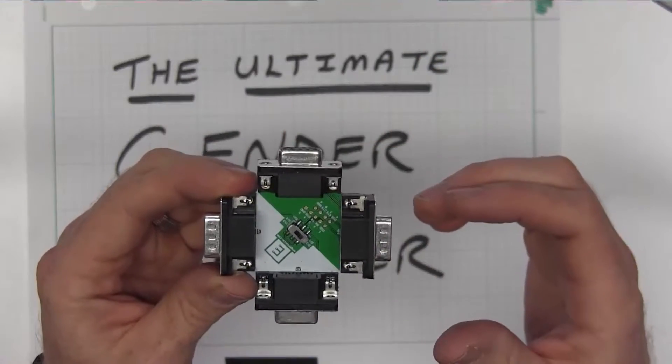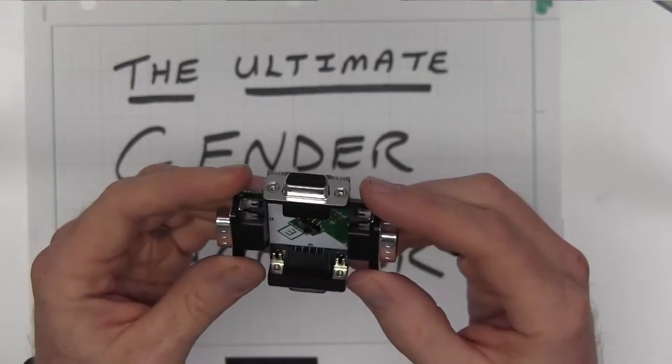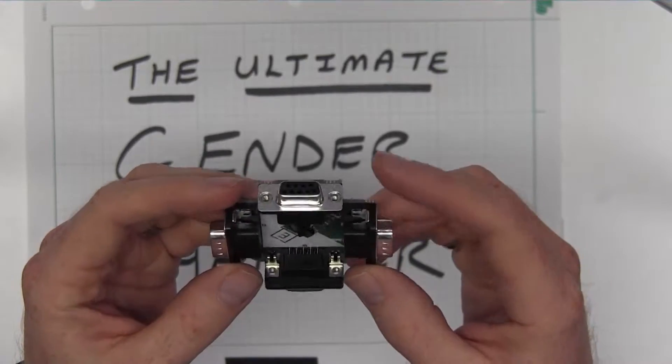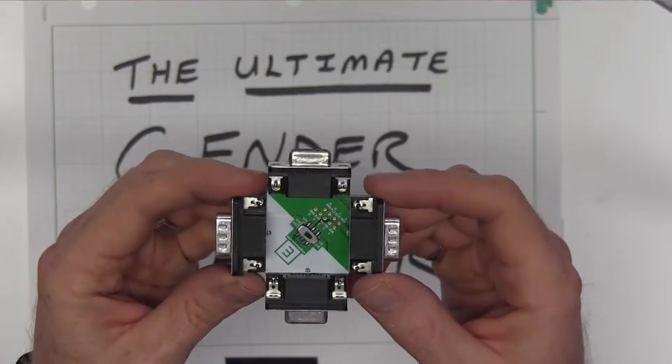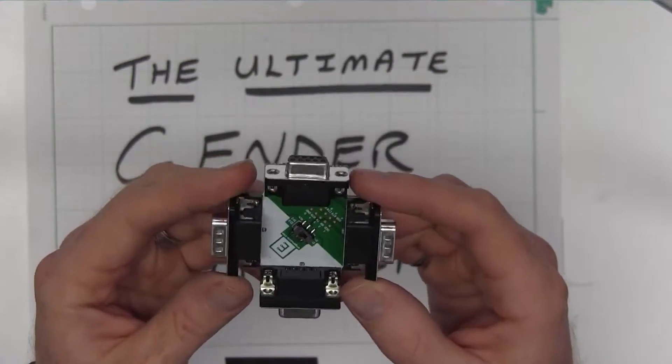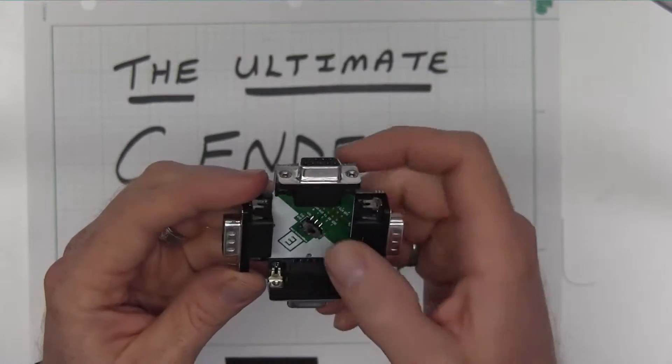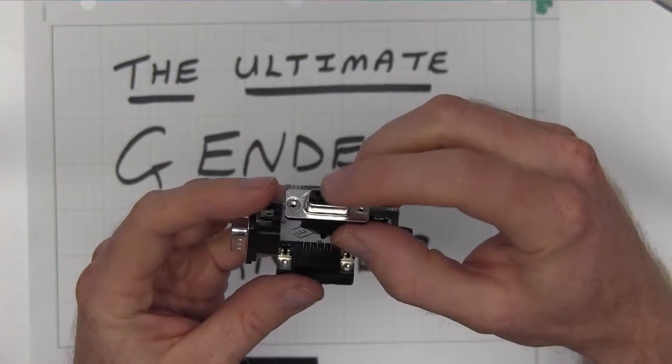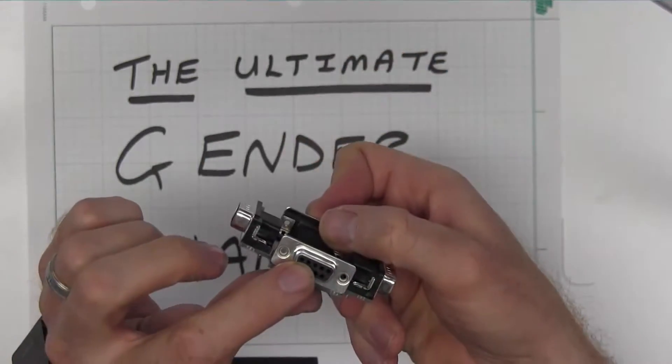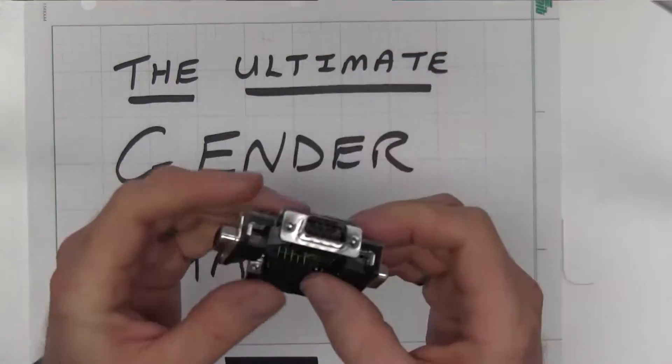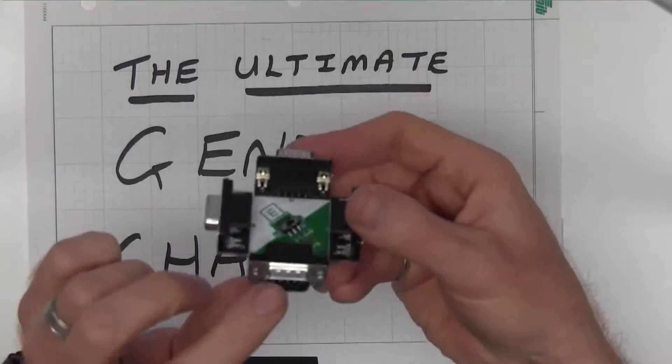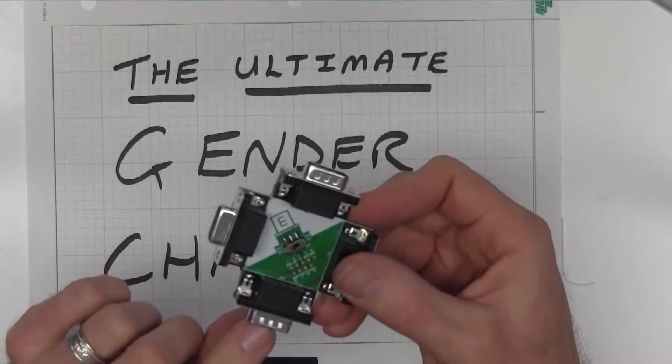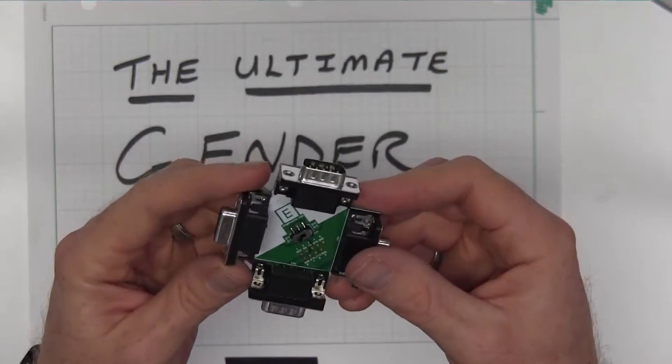What this allows you to do is if you wanted to use it in a classical gender changer sense, then you would keep this switch in the non-crossover point. You'd plug in your male cable there and then of course you'd have female available out there, or vice versa, plug in your female there and you have male there. So universally you can change all of those genders right on the fly.